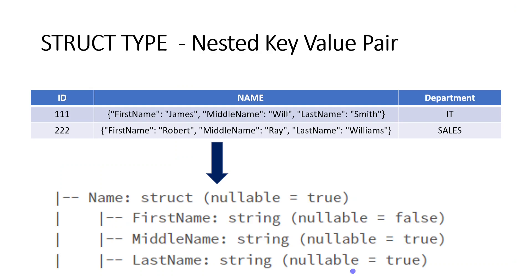As I explained in my previous video, let us assume we have a data frame with id, name, and department. The name field is internally divided into nested columns like first name, middle name, and last name. Basically, these are nothing but key-value pairs — the nested columns are divided in the form of key-value pairs, where the keys are first name, middle name, and last name. When we define the nested fields using struct type, upfront we have to mention what internal columns we are going to use. In this example, name should contain three internal fields: first name, middle name, and last name.